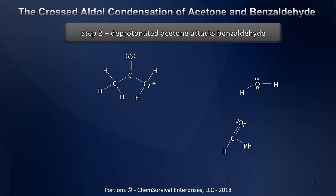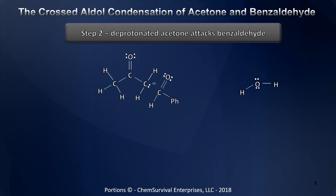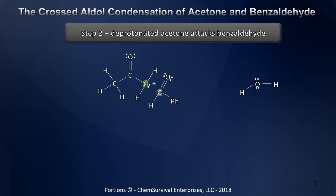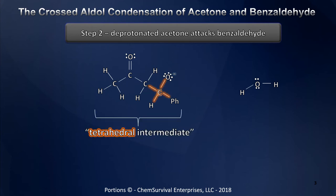In step two, that carbanion we've created is pretty nucleophilic, so it's going to immediately look for a good electrophile. That nucleophile is going to locate the electrophilic carbonyl of our benzaldehyde molecule. Electrophiles and nucleophiles create bonds through nucleophilic attack. As the attack occurs, notice there's no good leaving group, but there are pi electrons on the carbonyl of the aldehyde which can retreat onto its oxygen, allowing the attack to take place and form a tetrahedral intermediate.